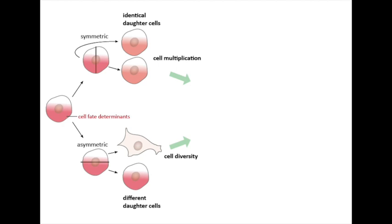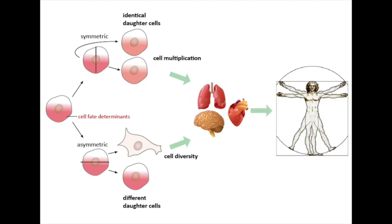Many organisms display a broad diversity of cell types. Part of this diversity is generated through cell division. Cells divide symmetrically to multiply, whereas asymmetric cell division generates daughter cells with different fate potentials, which leads to different cell types. During asymmetric cell division, cell fate determinants partition asymmetrically between the two daughter cells.